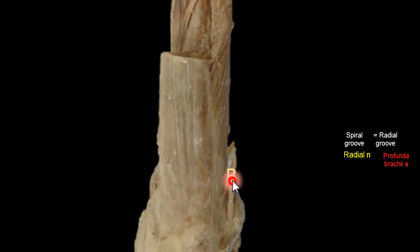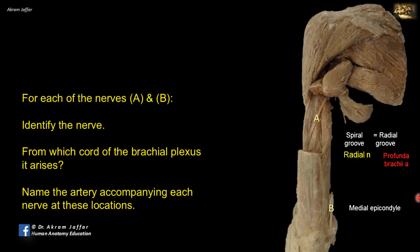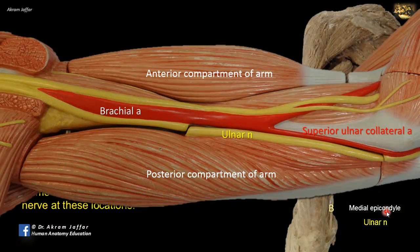Nerve B is located behind the medial epicondyle of the humerus, against which it can be rolled — it is the ulnar nerve. The ulnar nerve, initially in the flexor compartment of the arm, passes gradually backwards to pierce the medial intermuscular septum, accompanied by the superior ulnar collateral artery, a branch of the brachial artery. In the distal half of the arm, the ulnar nerve lies behind the medial epicondyle, and due to its close proximity it is liable to injury in fractures of the medial epicondyle.